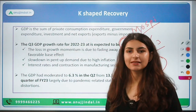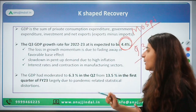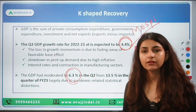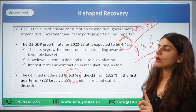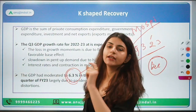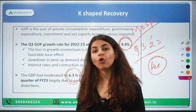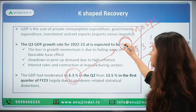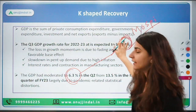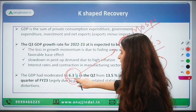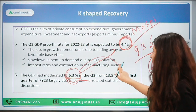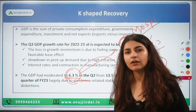Why is this in news? Because in the previous quarter, the growth was 6.3 percent, so the government is now answerable as to why growth in this quarter is expected to be low. In Q2 it was 6.3 percent, and in Q1 of this financial year it was 13.5 percent.